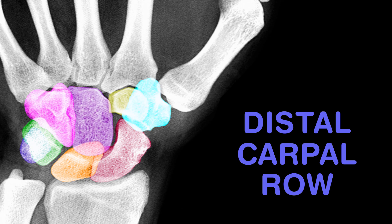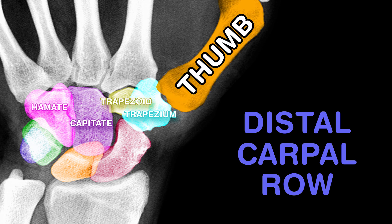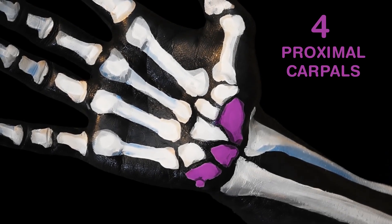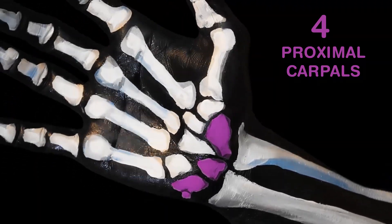First we will introduce the distal carpal row, and there are four of these that you need to know: ordered hamate, capitate, trapezoid, and then trapezium. The trapezium is the bone nearest to the thumb.